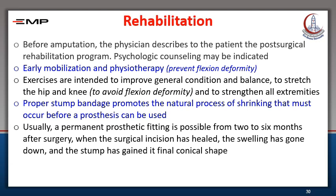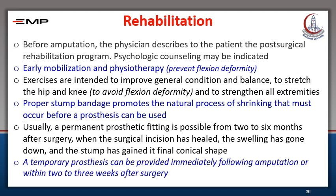Usually, a permanent prosthetic fitting is possible two to six months after surgery — when the surgical incision has healed, swelling has gone down, and the stump has gained its final conical shape. However, a temporary prosthesis can be provided immediately following amputation or within two to three weeks after surgery.